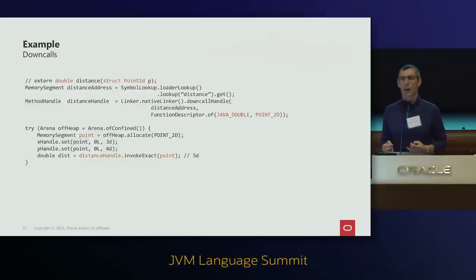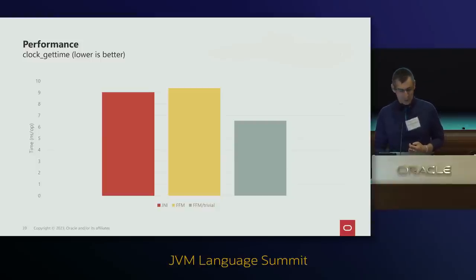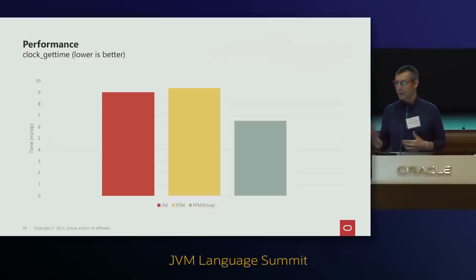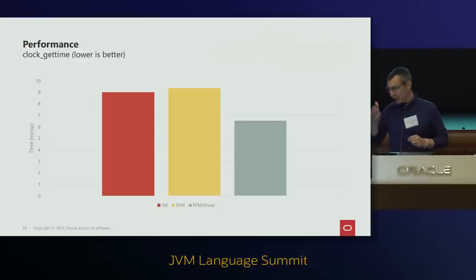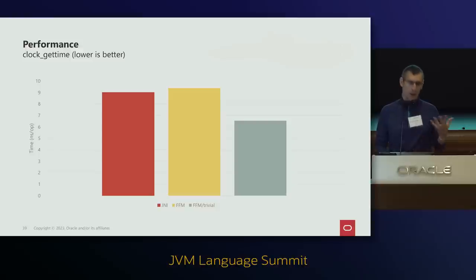Performance is good too. JNI and FFM API trade on essentially the same line — a 0.3 nanosecond difference, which is benchmark noise. One thing you can do with the FFM API is mark native code as trivial — meaning it will terminate quickly and not upcall back to Java — which shaves away additional nanoseconds by removing the thread state transition. This is known as critical JNI in the JNI world and is useful for low-latency Java code.